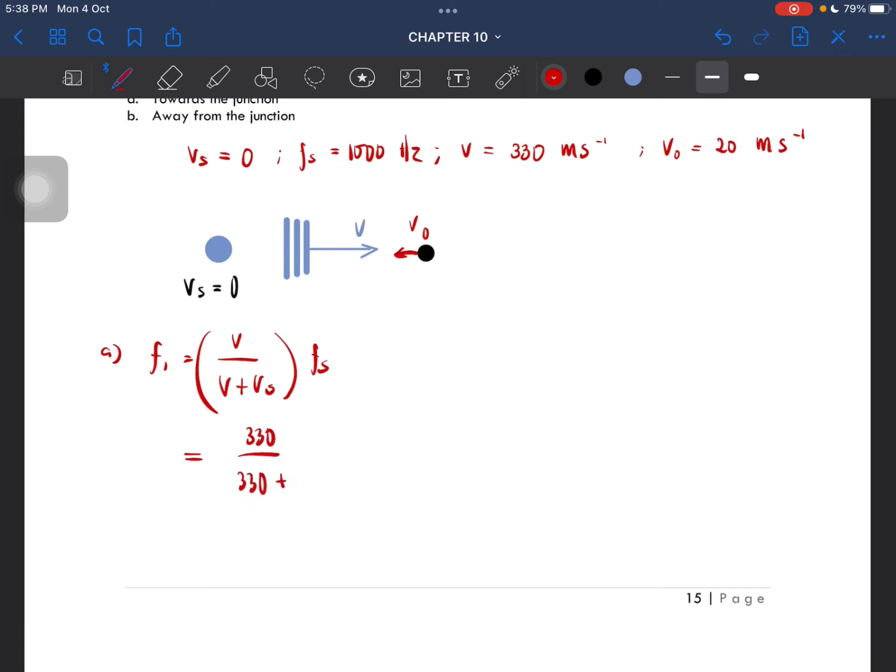Sorry, so v plus v observer over v times fs. So 330 plus 20 over 330, fs is 1000 hertz. So 330 plus 20 over 330 times 1000 hertz is 1061 hertz.